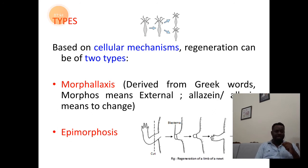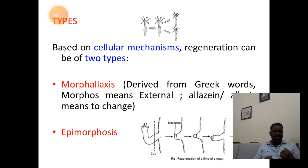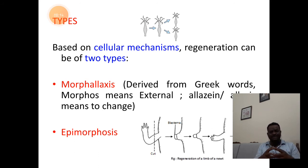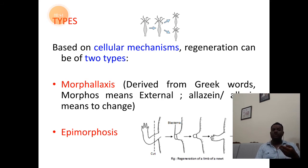Morphallaxis is a word derived from the Greek words: morphos meaning external or outer appearance, and allaxis or allassein meaning to show change. In morphallaxis, whatever parts are lost by the organism will be regained by whatever left-out parts remain. The existing left-out tissues will reorganize, reestablish, or reform the complete organ or organism. The best example is regeneration in hydra and planaria.